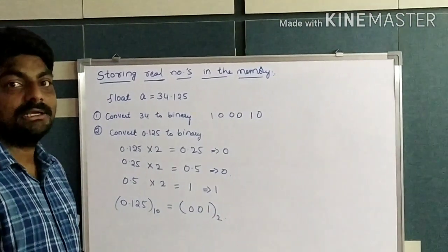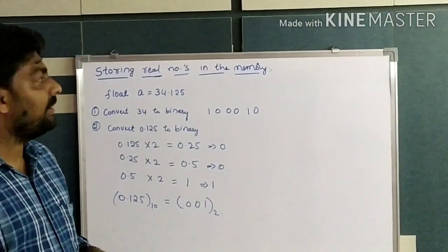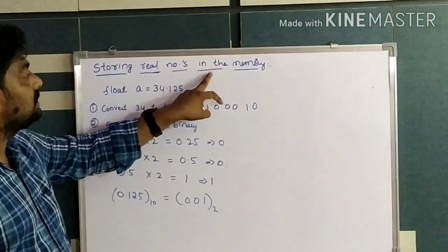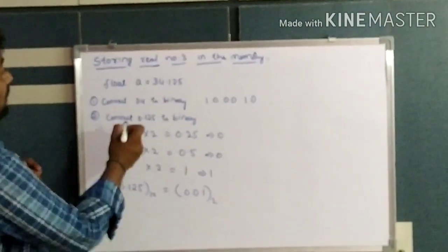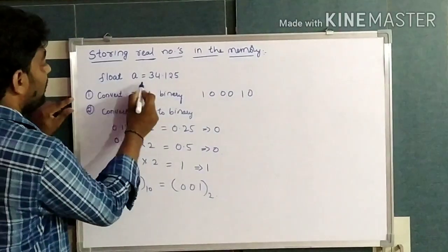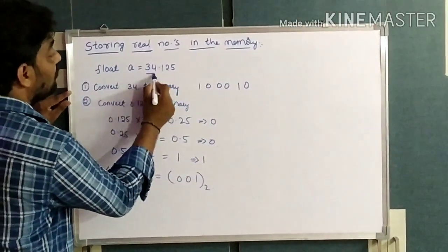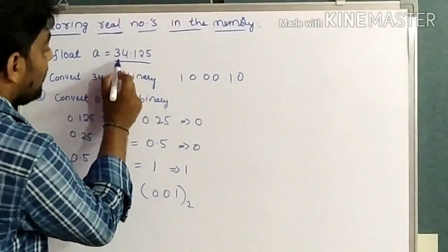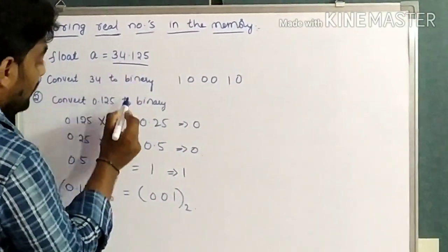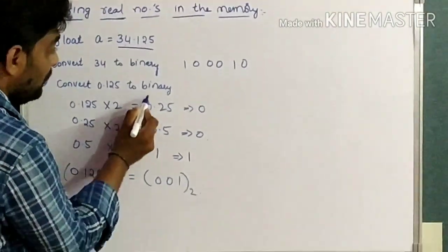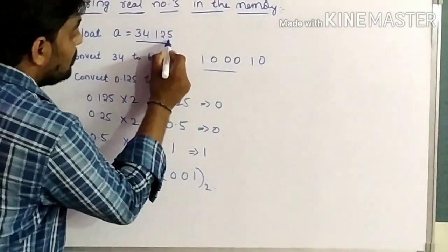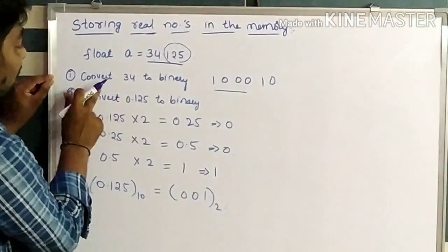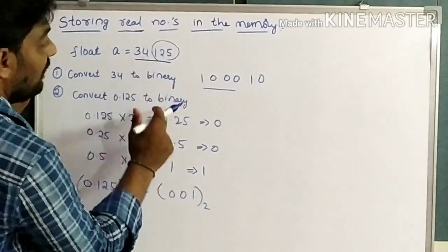Hi friends, in this class I am going to explain about storing real numbers or floating point numbers in the memory. Here I take a floating point variable: float a is equal to 34.125. First we have to convert 34 into binary value and next 0.125 into binary value. First I am going to convert 34 to binary value.